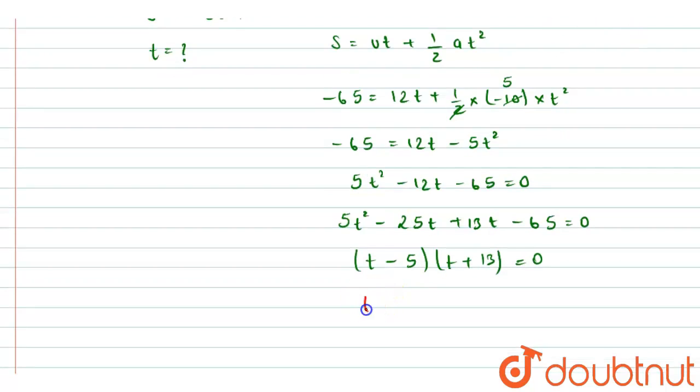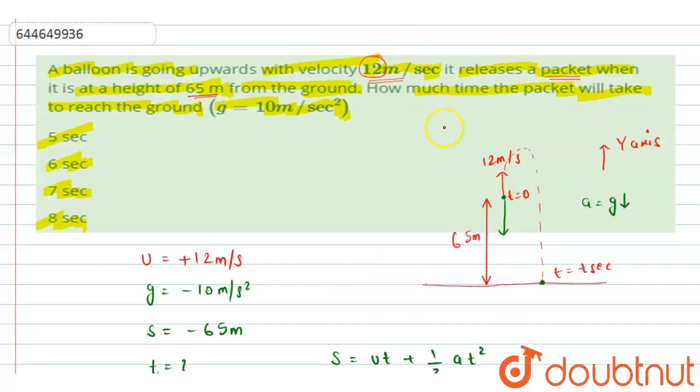So from here we will get two values of t, that is t equals to 5 seconds or t equals to minus 13 seconds. Time can never be negative, so we will take the value of t equals to 5 seconds.